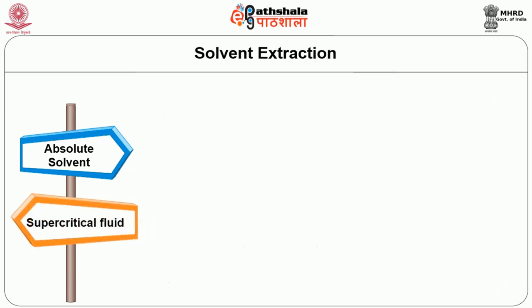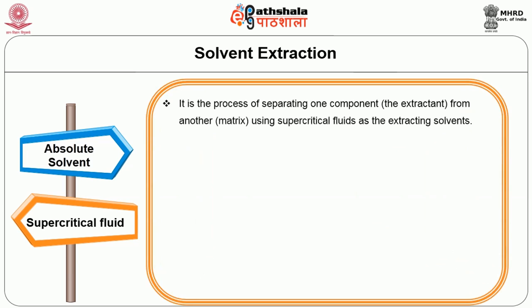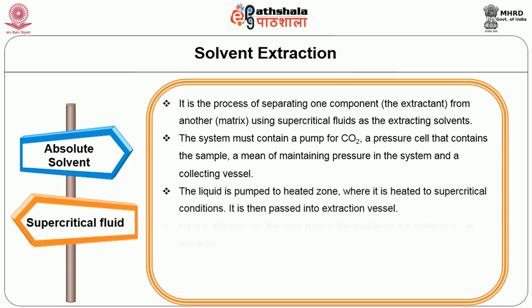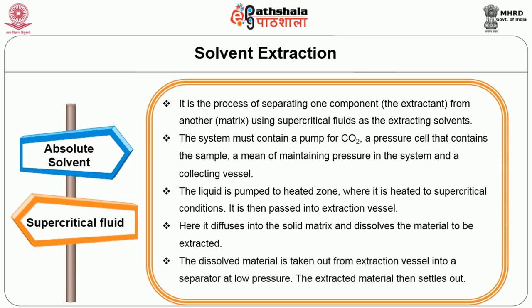The next one is supercritical fluid extraction. It is a process of separating one component from another using a supercritical fluid as the extracting solvent. The system must contain a pump for carbon dioxide, a pressure cell that contains the sample, a means of maintaining pressure in the system, and a collecting vessel. The liquid is pumped to the heating zone where it is heated to supercritical conditions, then passed into the extraction vessel where it diffuses into the solid matrix and dissolves the materials to be extracted. The dissolved material is taken out from the extraction vessel into a separator at lower pressure, and the extracted material then settles out.